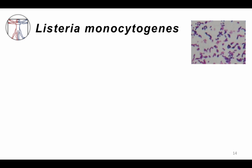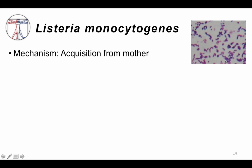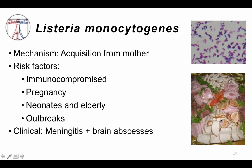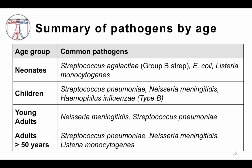Lastly, Listeria monocytogenes is a gram-positive rod. Typically, infection in neonates is acquired from the mother. However, in adults — particularly immunocompromised patients — infection can occur through ingestion. Risk factors include immunocompromised state, pregnancy, neonates, the elderly, and exposure to contaminated food in an outbreak. Classically, deli foods are associated, but there have also been outbreaks with cantaloupe and other produce. Clinical disease is meningitis, but it's important to recognize that Listeria can also cause brain abscesses. We'll return to the summary chart of pathogens by age group for reference.